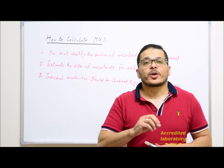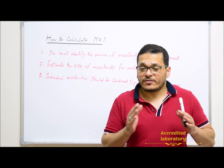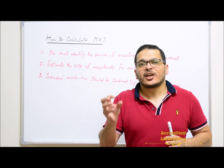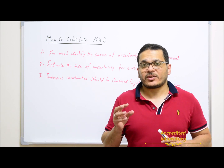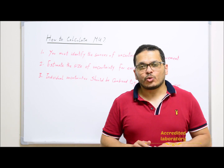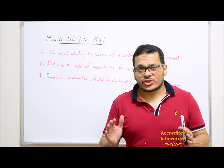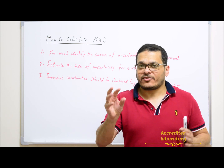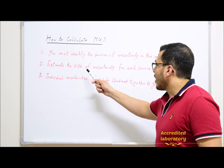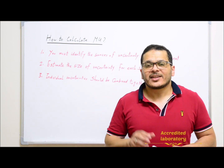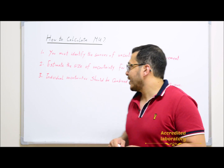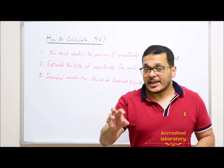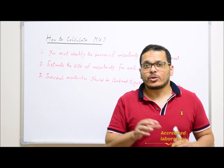Equipment such as micropipettes and balances will have a calibration certificate. Inside this certificate you will find measurement uncertainty values. You will use these measurement uncertainties from calibration certificates and add them to your overall measurement uncertainty. You will identify all sources that may affect or change the final results, then estimate the size of uncertainty for each source.